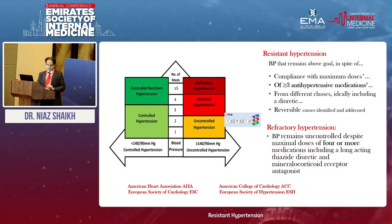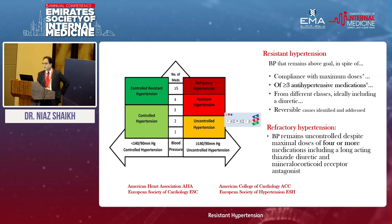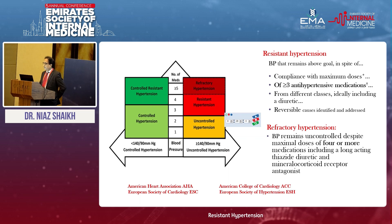I would straight away go to the definitions because it's very important to understand the definition of resistant hypertension. What we mean by resistant hypertension, as defined by the American and European societies, is the compliance with the maximum doses of at least three hypertension medications from three different classes, and one of them should be the diuretic.